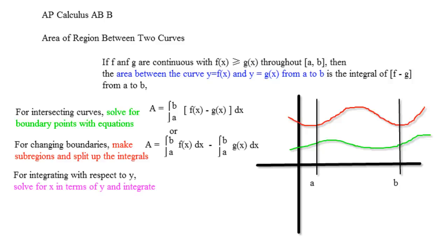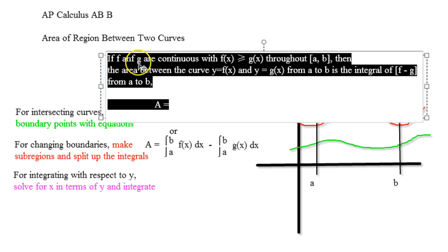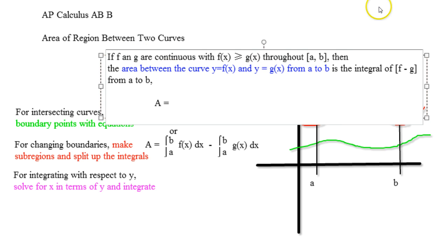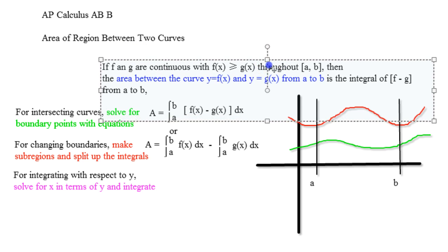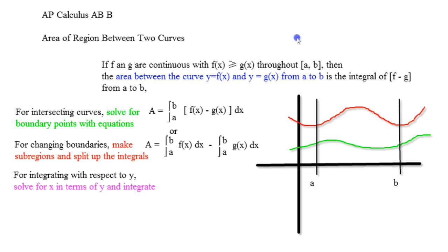We have a lot of information today when talking about the area of regions between two curves. If f and g are continuous with f of x being greater than g of x throughout the interval a to b, then the area between the curve y equals f of x and y equals g of x from a to b is the integral of f minus g from a to b.